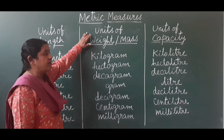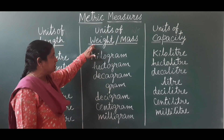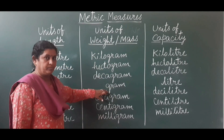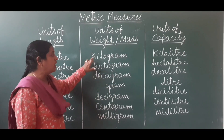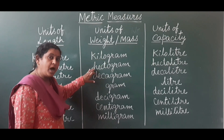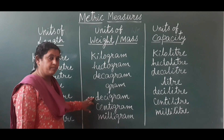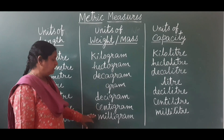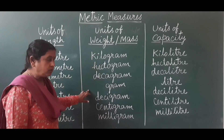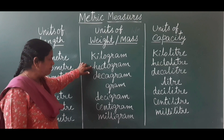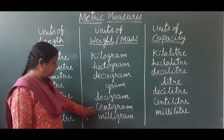Next, units of weight. The same units apply, but the basic unit changes to gram. The basic unit of weight is gram. The biggest unit of weight is kilogram, and the smallest is milligram. In order: kilogram, hectogram, decagram, gram, decigram, centigram, milligram.